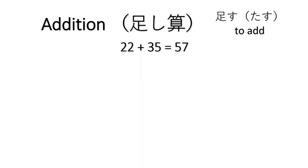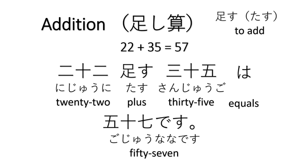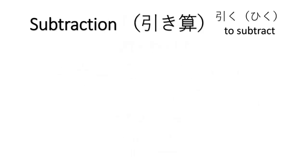Twenty-two plus thirty-five equals fifty-seven. Now we have subtraction, hikizan. We use the verb hiku to subtract.